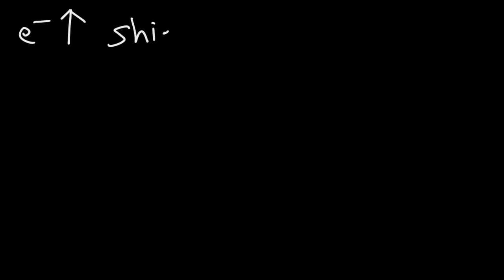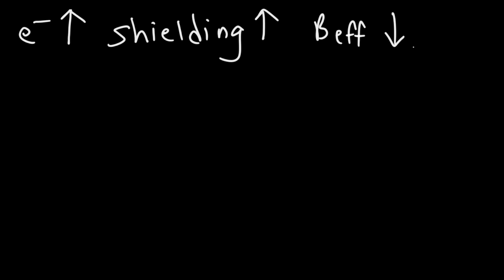Let's summarize what we've considered so far. As the number of electrons surrounding the nucleus increases, or if the nucleus is in a more electron-rich environment, the shielding effect will increase. And as that goes up, the effective magnetic field that the nucleus experiences will decrease, which will decrease the resonant frequency — the frequency required to bring the nucleus to magnetic resonance.